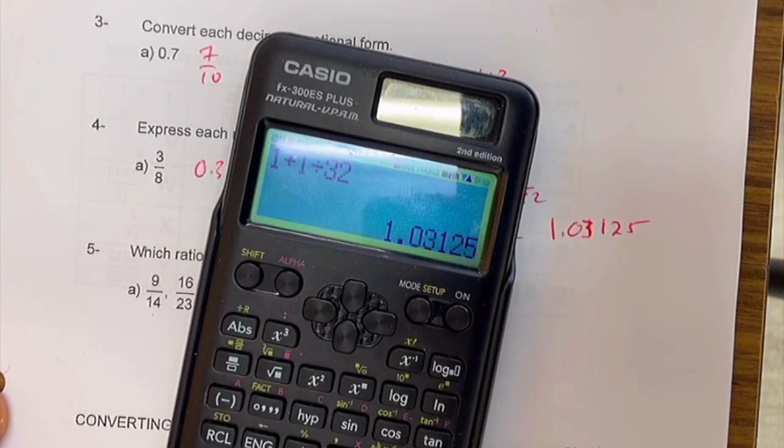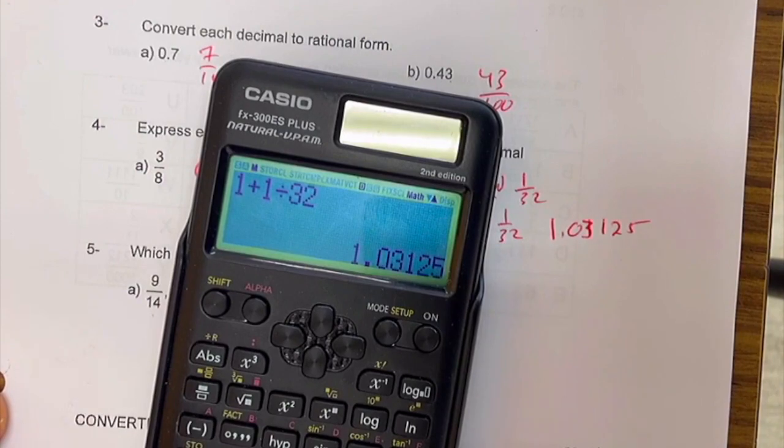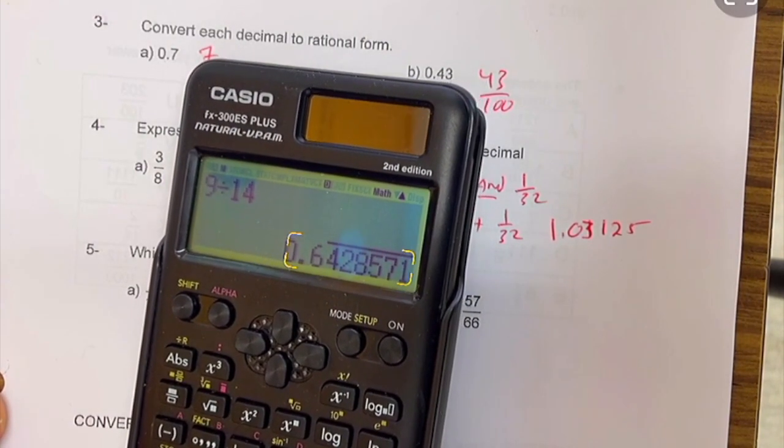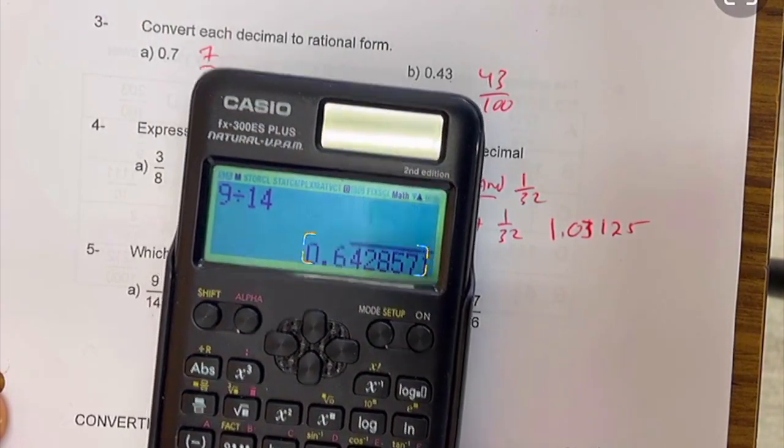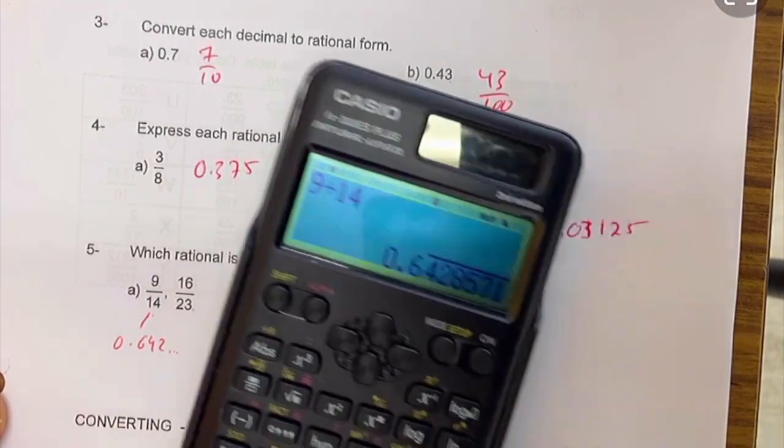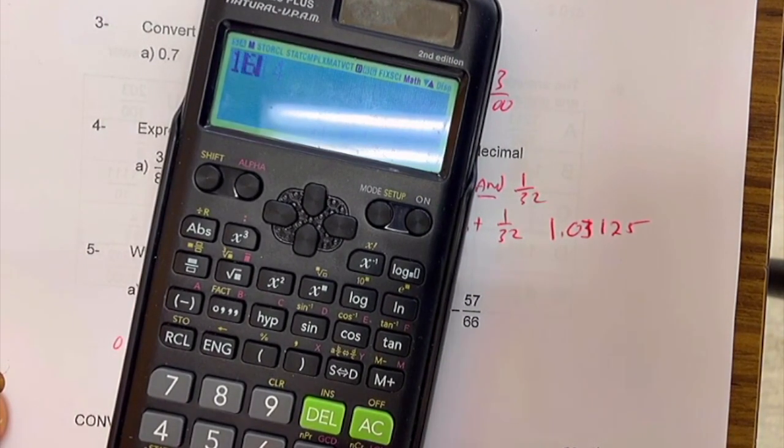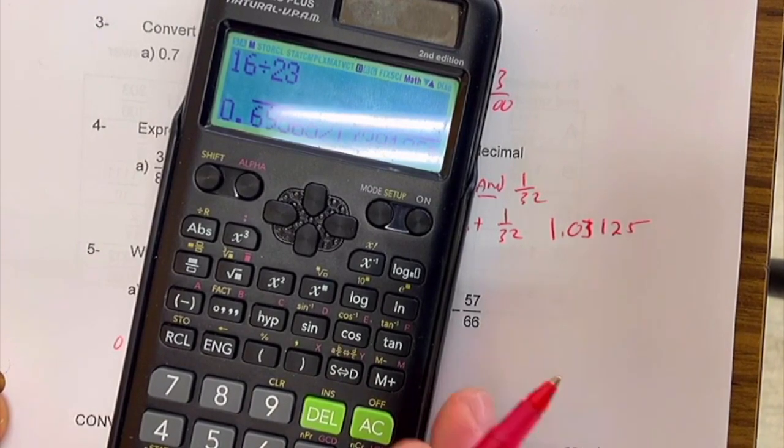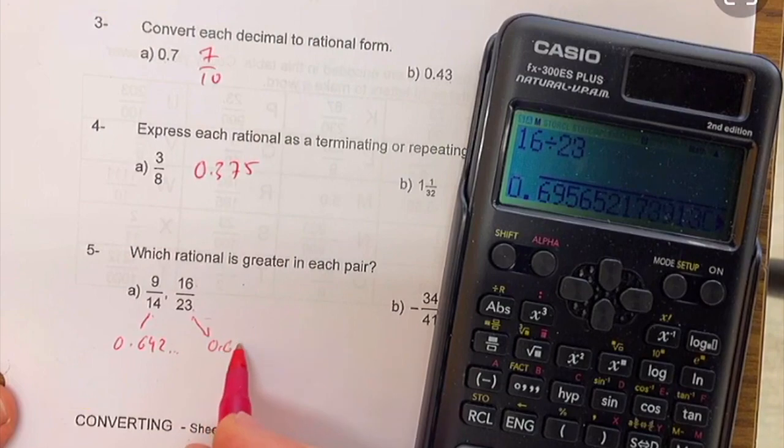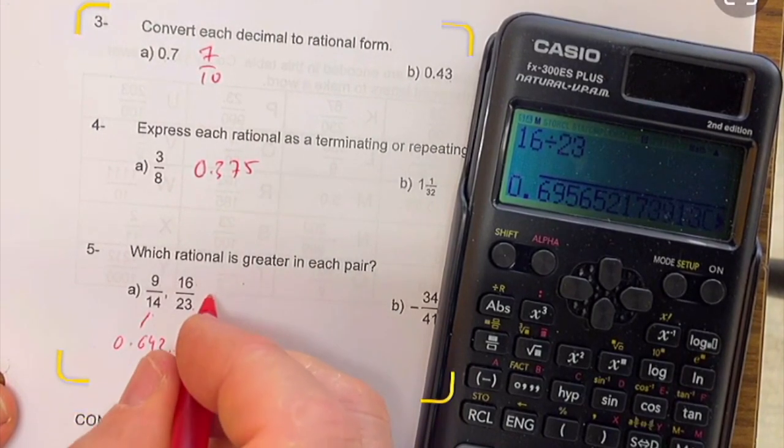It's a lot easier just to say 9 divided by 14 is 0.6428571, and you can see it's a repeating decimal. 0.642 dot dot dot. 16 over 23. 16 divided by 23 is equal to 0.6956. 0.659. This guy is greater.